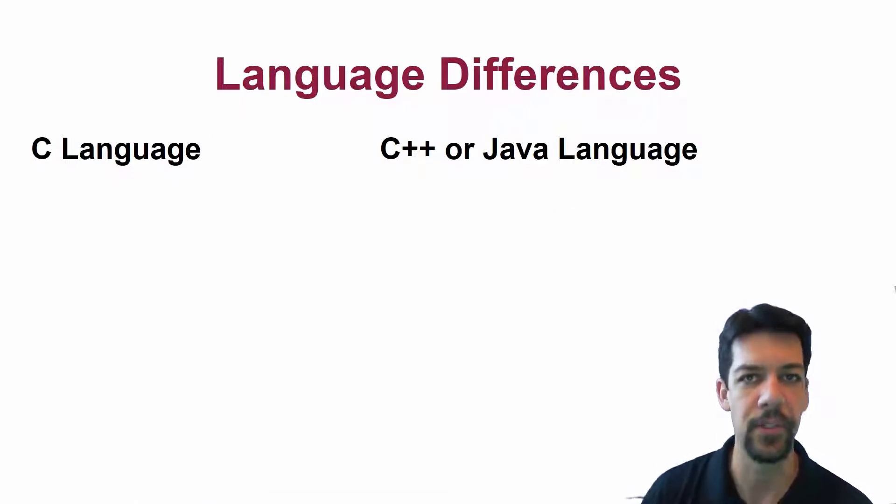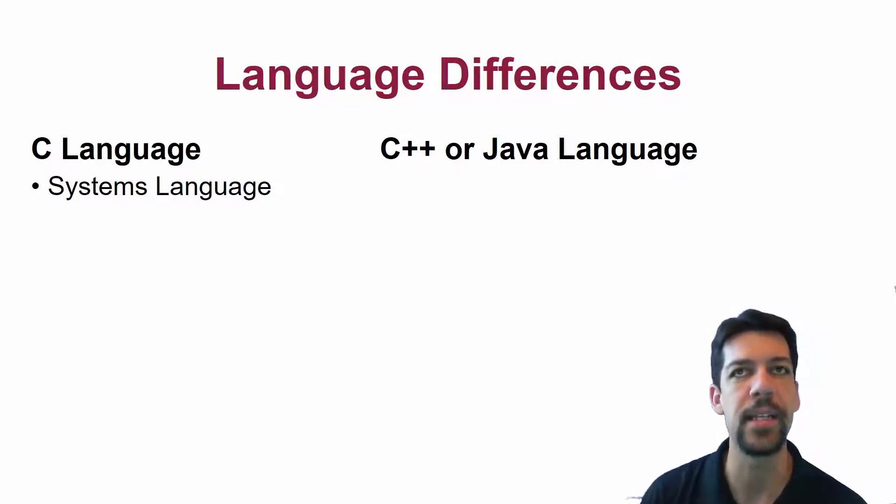Now let's look at some of the differences. First off, C is a systems language. That means C is built for developing operating systems. It's designed for building low-level whole systems. Operating systems are developed using C most often, not C++ or Java, surprisingly.